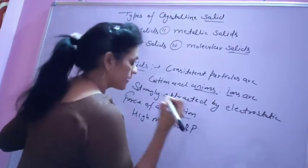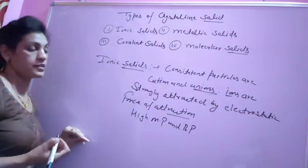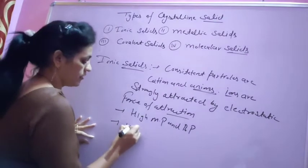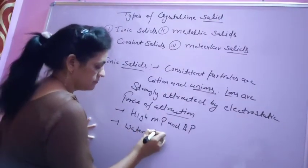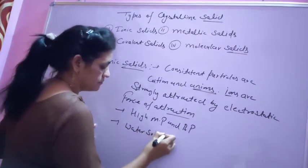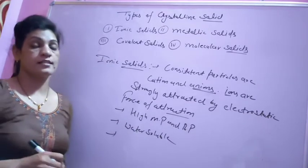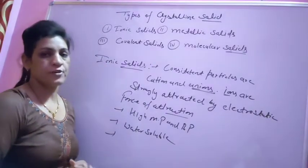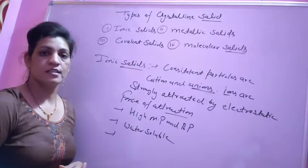Ionic compounds are soluble in water. As for electrical conductivity, in the solid form, ionic compounds do not freely conduct electricity because the ions are not free to move — they are held in the crystal lattice.